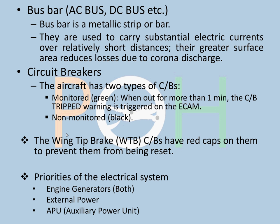Circuit breakers are one of the most important components of the electrical system — basically a fuse in common terms. There are two types: monitored and non-monitored. Monitored ones are green; if the CB pops out and stays out for a minute, a warning is shown on the ECAM. Primary components will generally be monitored. Non-monitored are less critical — for example, if in-flight entertainment has tripped, that's not important to show on the ECAM. Importantly, the wingtip brake CBs have red caps to prevent them from being reset in the air.